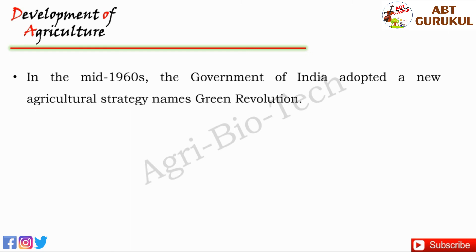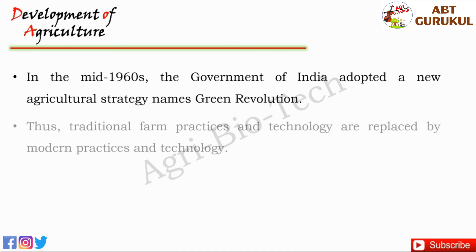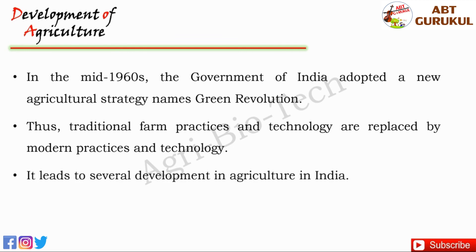In the mid-1960s, the government of India adopted a new agricultural strategy named the Green Revolution. Thus, in India, traditional farm practices and technology are being gradually replaced by modern practices and technology. This led to several developments in agriculture in India.